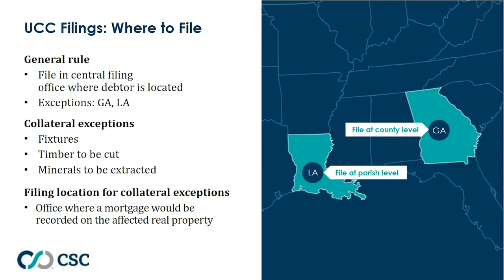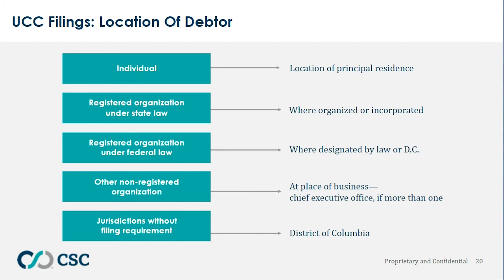UCC filings: where to file? The general rule is to file in the central filing office where the debtor is located. There are exceptions — Georgia files at the county level, and Louisiana files at the parish level. Collateral exceptions include fixtures, timber to be cut, and minerals to be extracted from the earth; these are filed in the office where a mortgage would be recorded on the affected real property. For determining debtor location: individuals use principal residence; registered organizations under state law use where organized or incorporated; registered organizations under federal law use where designated by law, or Washington, D.C.; other non-registered organizations use place of business or chief executive office; and jurisdictions without a filing requirement use Washington, D.C.